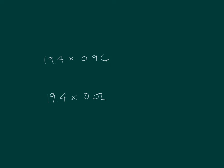Here I have two more products where I have 19.4 times 0.96. I also have 19.4 times 0.02. 96 hundredths, 2 hundredths.